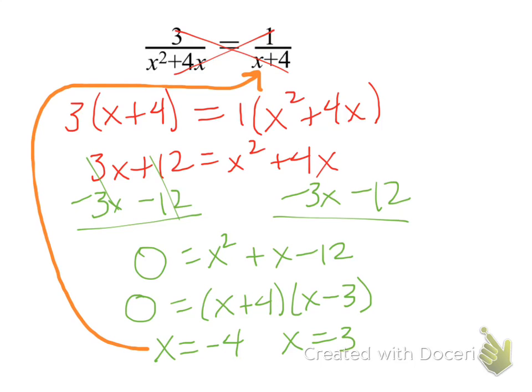But you need to make sure that you check your answers. If you notice, if you were to plug negative 4 back in, we would end up with 0 on the denominator. And as you should hopefully realize and remember from when we graph these rational functions, you can't divide by 0. So we need to disregard that solution. And our only solution, and it works, is x equals 3.